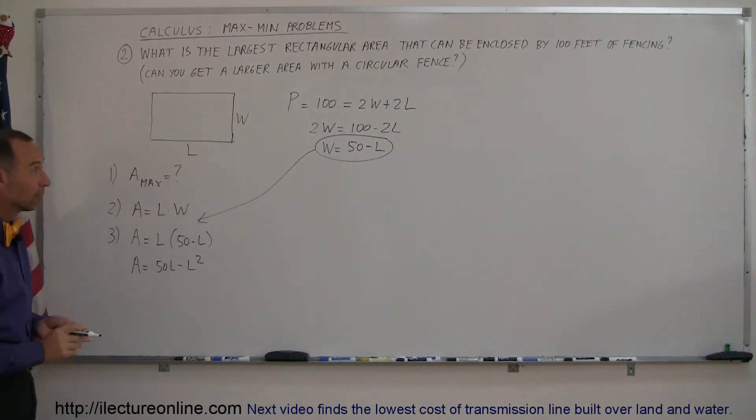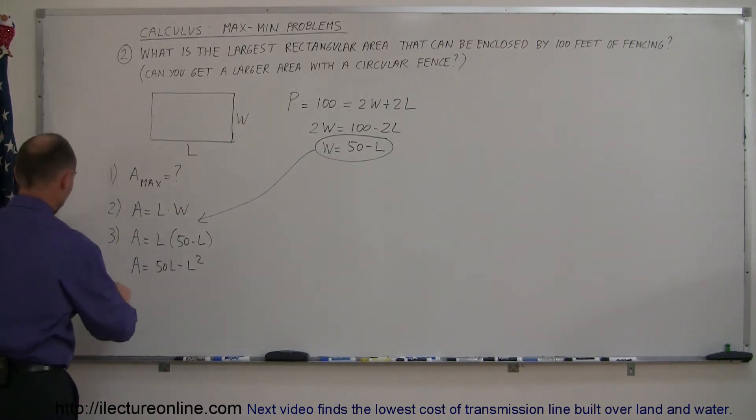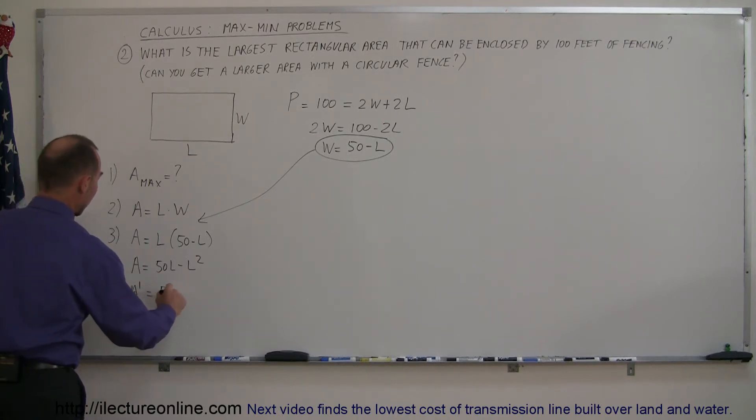What's the next step? The next step is to find the derivative of that equation. So A' equals, in this case, it would be 50 minus 2L.